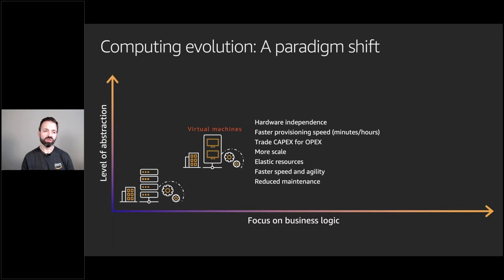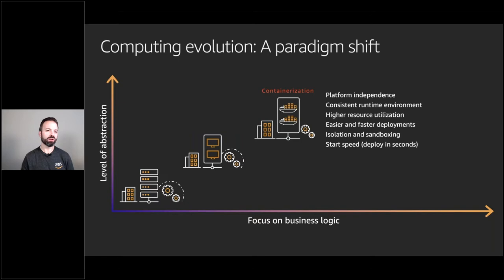Over time, advancement in virtualization separated operating systems from hardware, allowing you to scale and modify environments much more quickly. Provisioning a virtual machine is much quicker than provisioning a full hardware server. Then containerization provided an even higher level of abstraction with a consistent runtime environment, letting developers focus more on the logic of their applications rather than OS compatibility and host configuration. Starting a container is much closer to starting an application than starting a virtual machine.